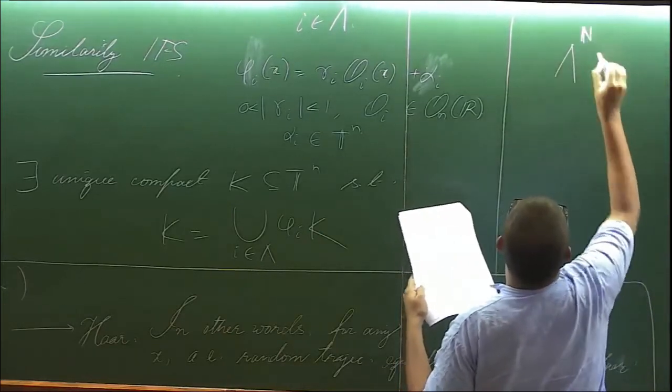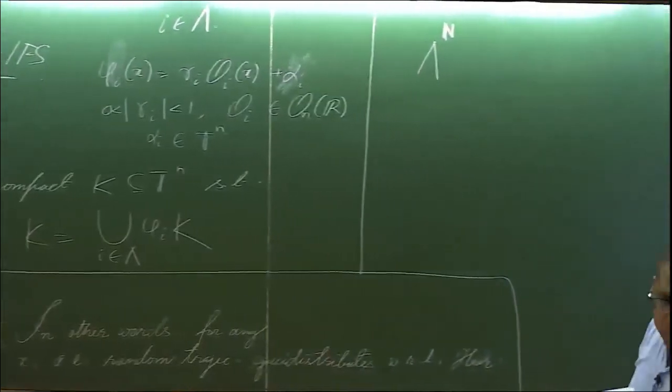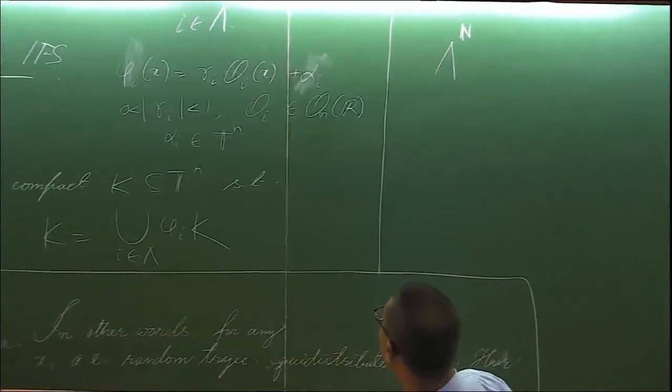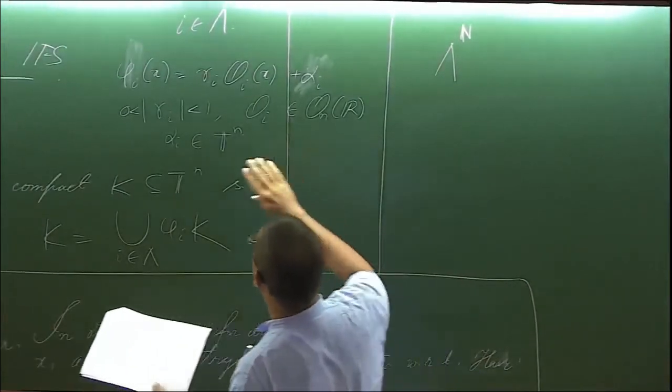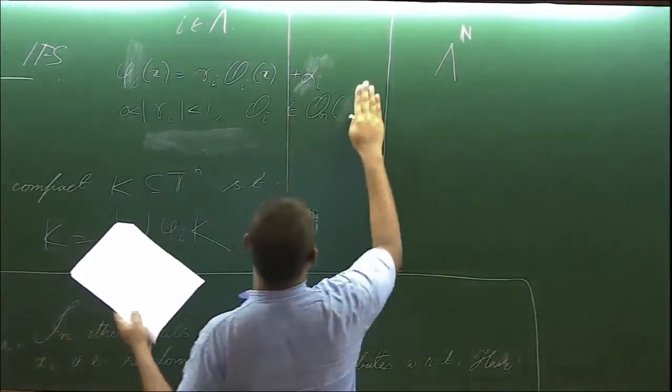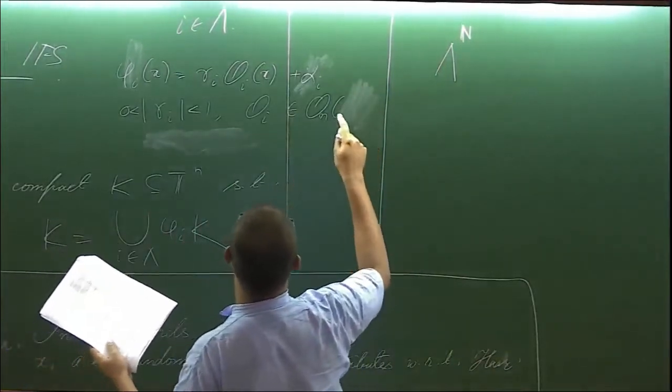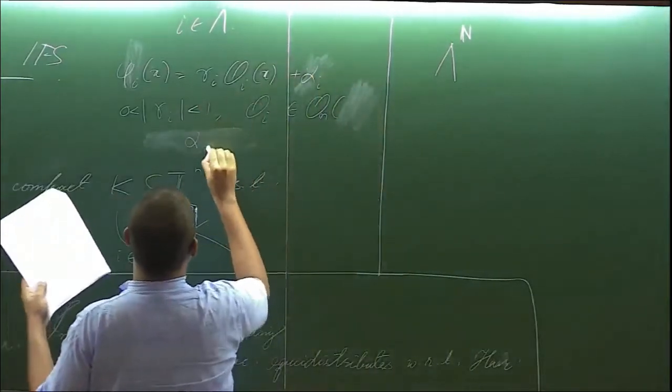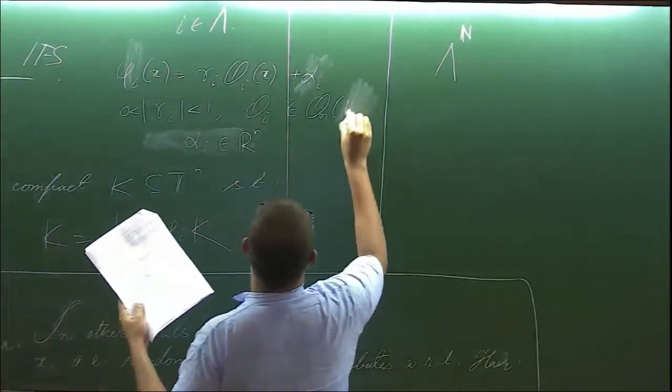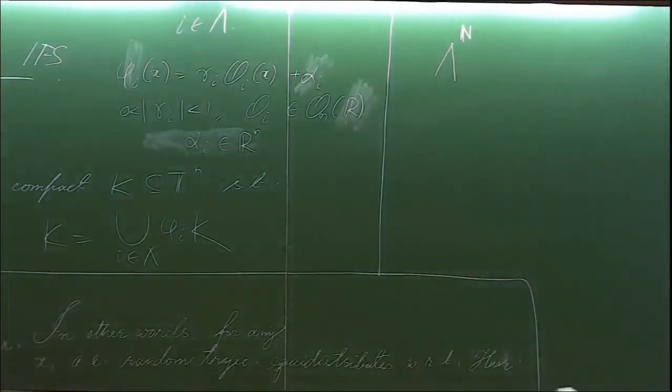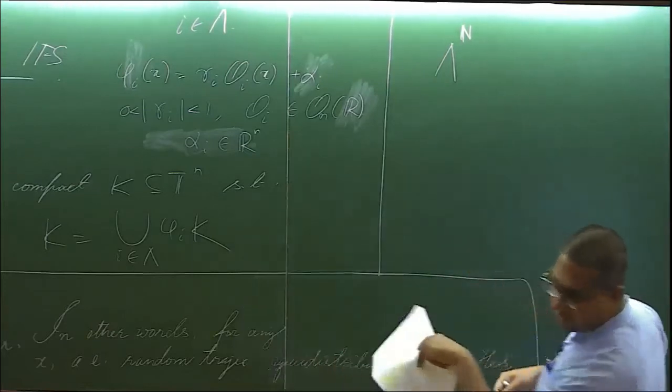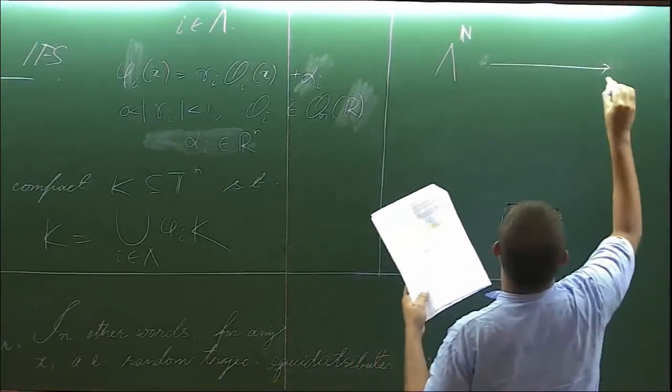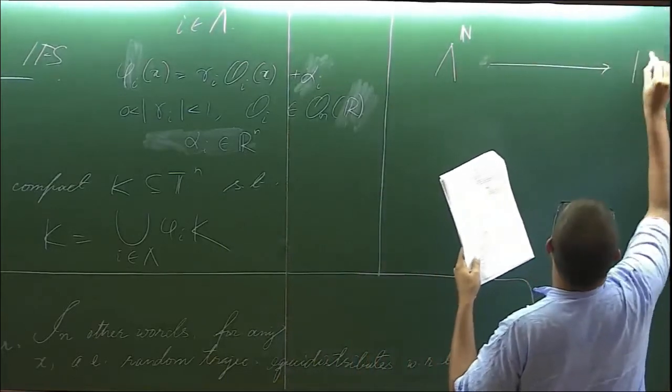We can consider this coding map. For the time at least here, here you can consider everything with integer coefficients. For at least here you consider everything in RN. In our context, we will be considering the iterated function system on the torus only. So we have this coding map to the attractor K.